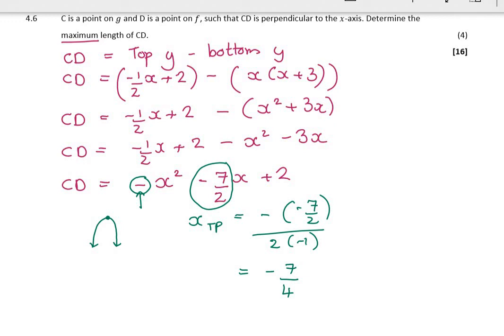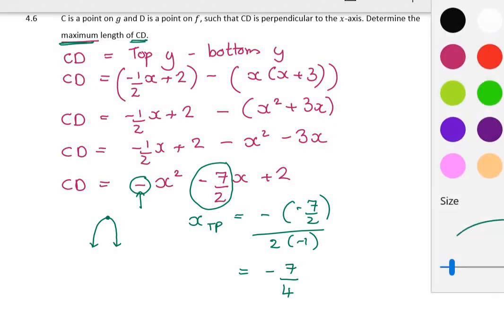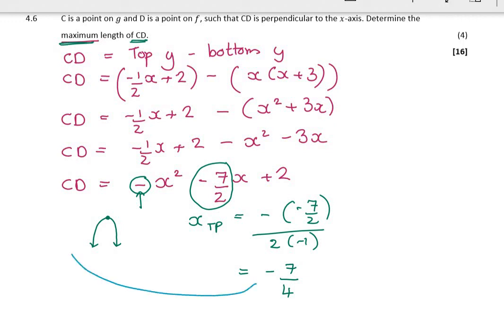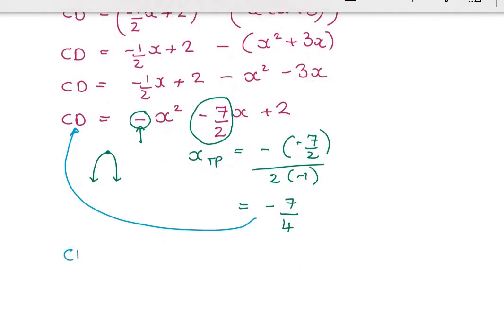Now, did they ask for the x value that maximizes it? Nope. They ask for the maximum length of CD. So I've got to go and take this negative 7 over 4 and put it back into my expression for CD. So CD is going to equal to negative (negative 7 over 4) squared minus 7 over 2 times negative 7 over 4 plus 2.